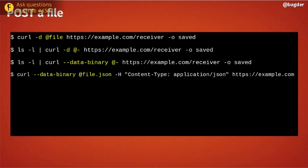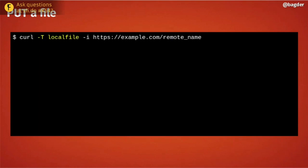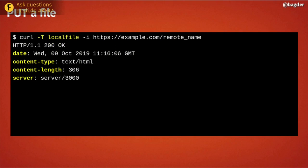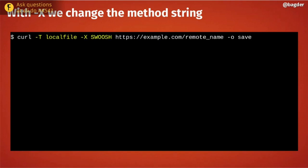PUT is another way to send data to an HTTP server — it's meant to replace a resource with new content, rather than just send data. You do it with the uppercase-T flag and provide a local filename. You get the response headers and body back since we used dash-i. If the built-in methods aren't enough, you can change the HTTP method sent to the server with the capital-X option.